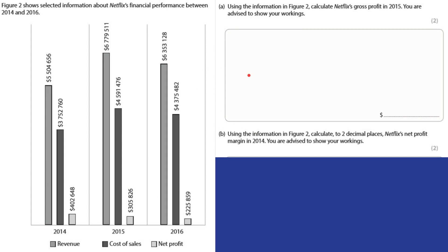Now looking at Netflix financial performance between 2014 and 2016. We've got revenue, cost of sales, and net profit — and this question asks you to calculate Netflix's gross profit in 2015. To work that out, take the revenue figure of 6,779,511 and subtract the cost of sales of 4,591,476. That will give us the gross profit — revenue minus cost of sales.